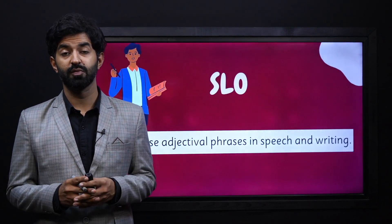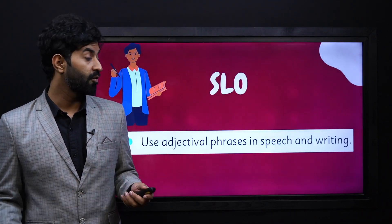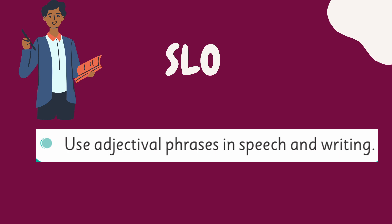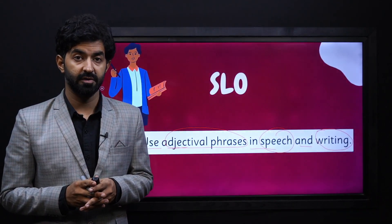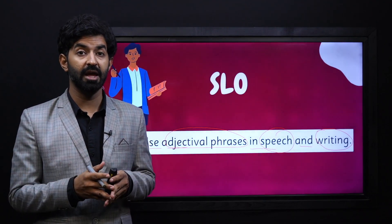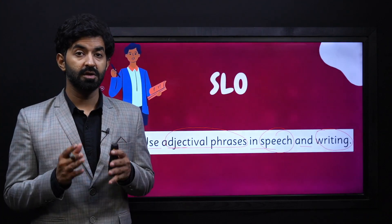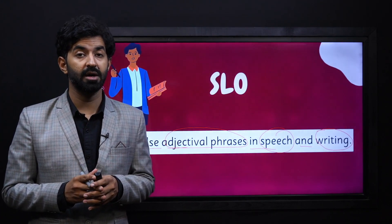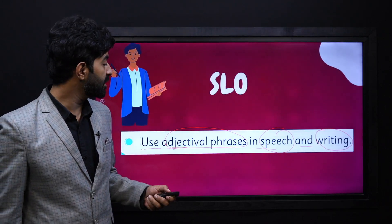Let's read and explore our student learning outcome to see how we can achieve it. We are dealing with adjectives here. Our student learning outcome is to use adjectival phrases in speech and writing. We have already learned about adjectives. Now it's time to understand what adjectival phrases are — phrases that contain adjectives. This is what we are supposed to do in both our speech and our writing: use adjectival phrases.